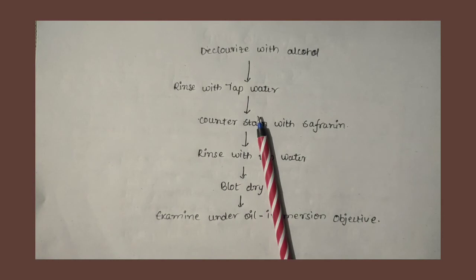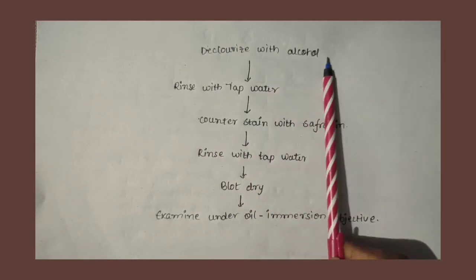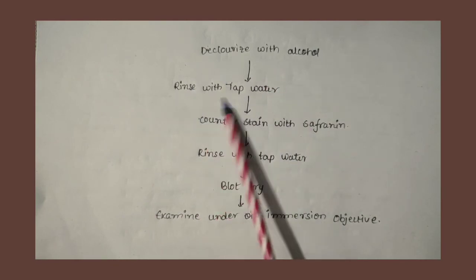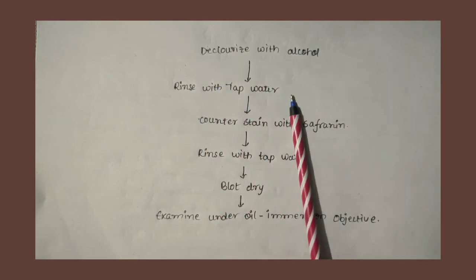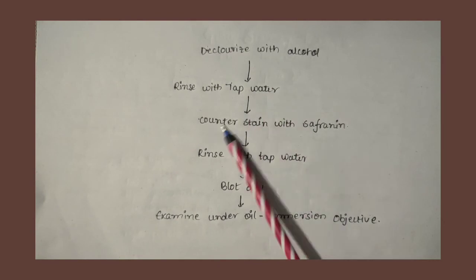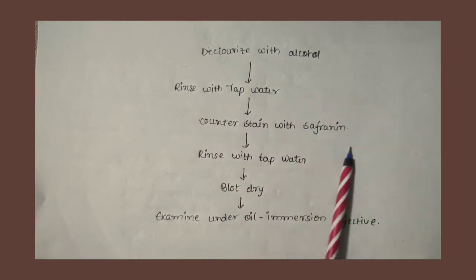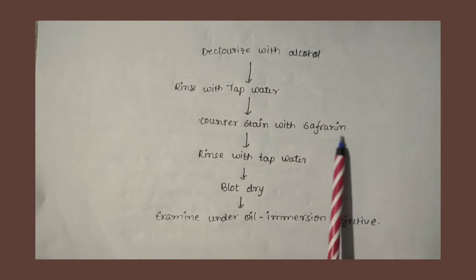So gram positive has the crystal violet and iodine complex tightly bound. After that, we have to rinse with tap water. Next, we add counter stain safranine. Safranine is a red color dye.